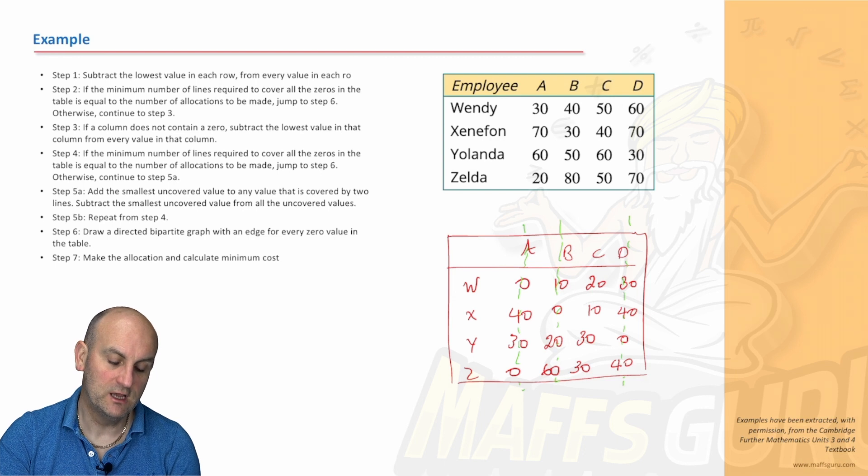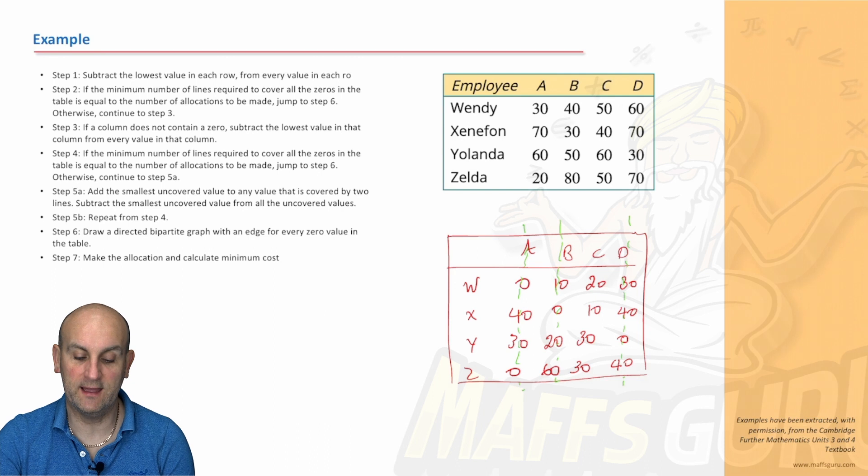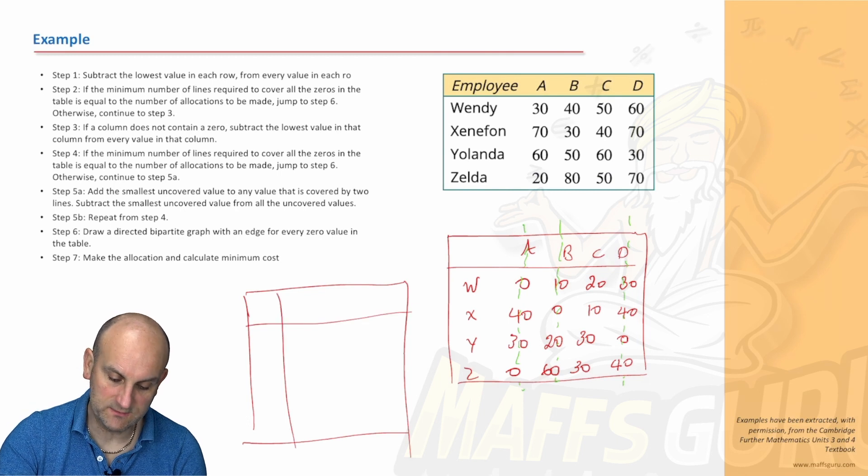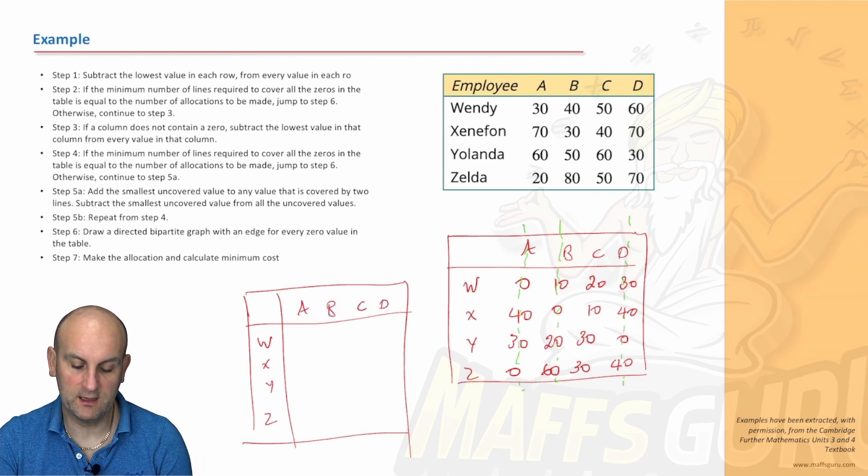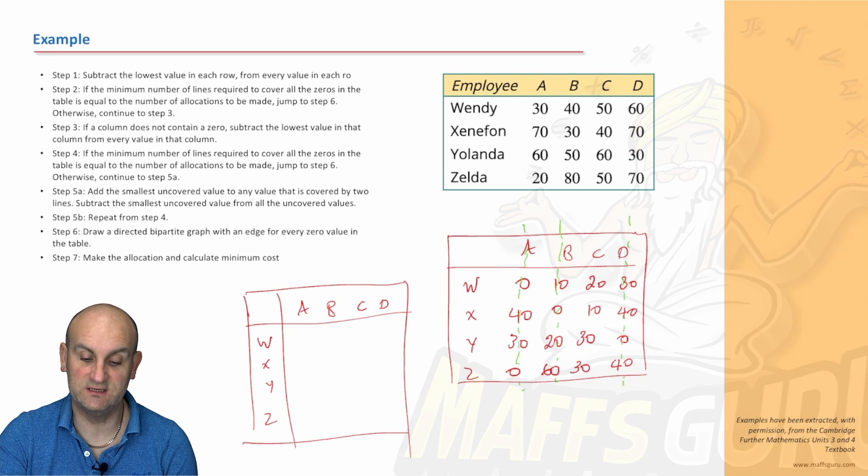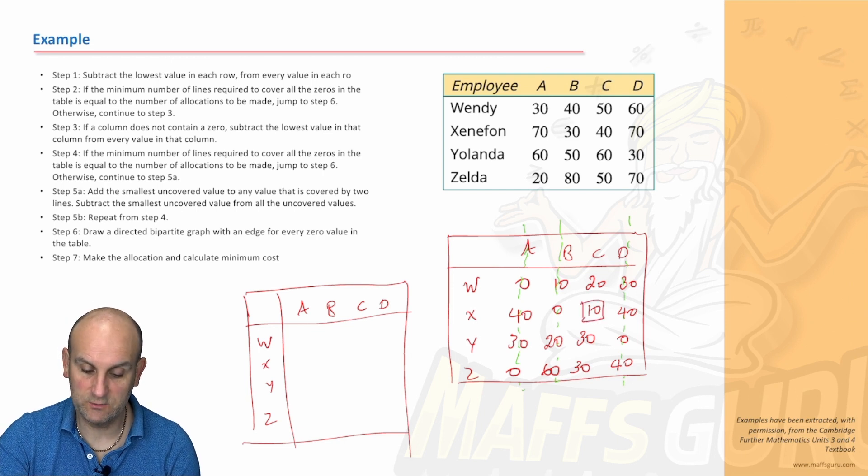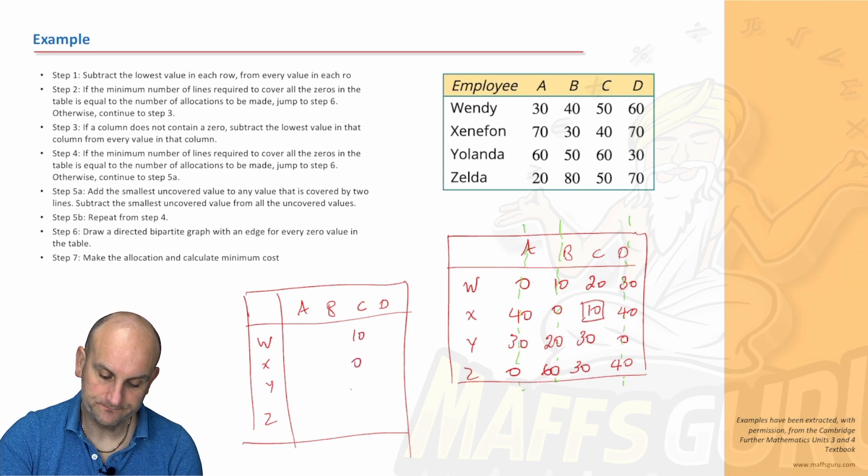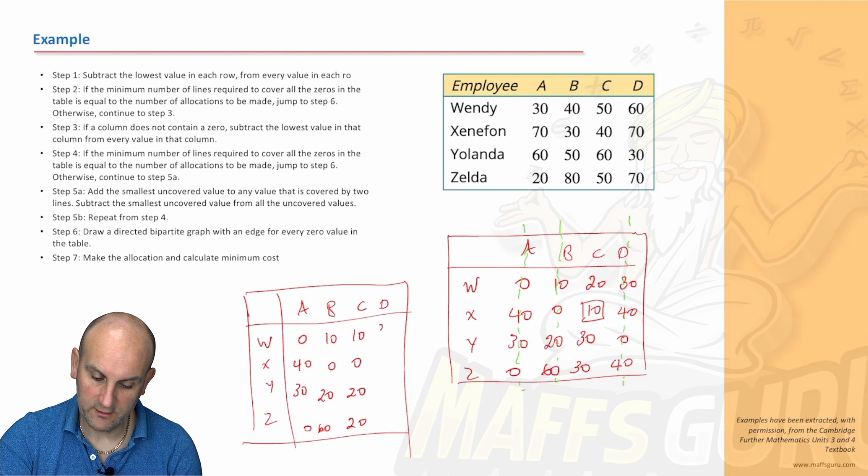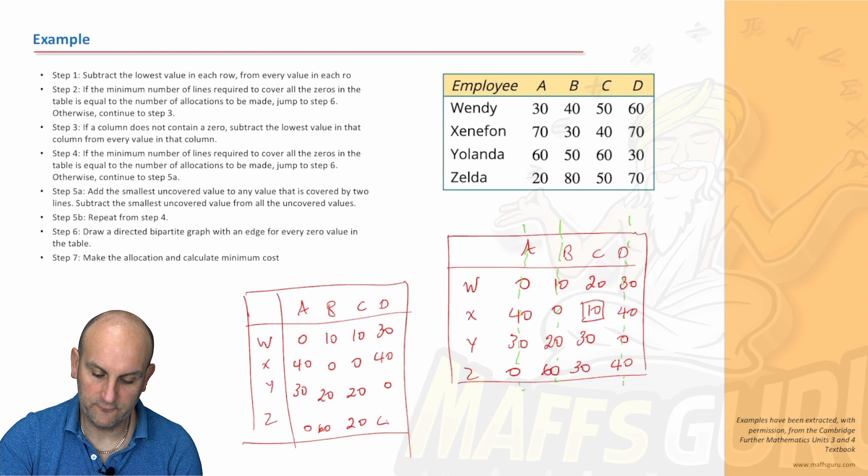Step three. If a column does not contain a zero, subtract the lowest value in that column from every value in that column. So I'm going to draw another version of the table here. And you're going to say, really, you've got to keep drawing these tables. Well, I am at this moment in time. What do we have? W, X, Y, and Z. We've got A, B, C, and D. So what does it say? If a column does not contain a zero, subtract the lowest value in that column. So column C doesn't have a zero in it. So I'm going to subtract 10 because that's my smallest value there. So that's going to become 10, 0, 20, and 20. All the other numbers stay the same. So we've got 0, 40, 30, and 0. What do we got there? 10, 0, 20, and 60. What do we have there? 30, 40, 0, and 40.